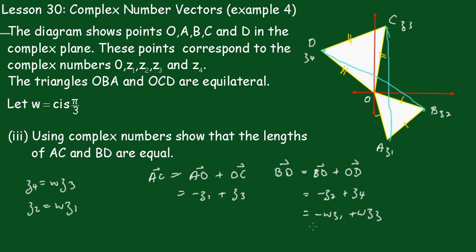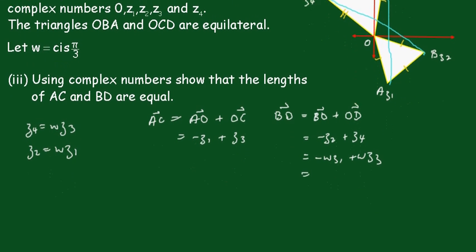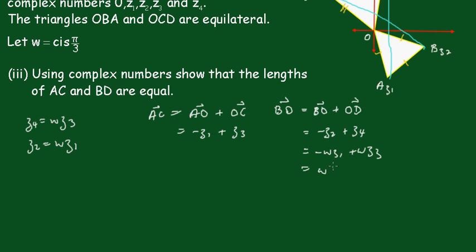And we'll take out that W and we get minus Z1 plus Z3. So that's AC. So that's W times AC.